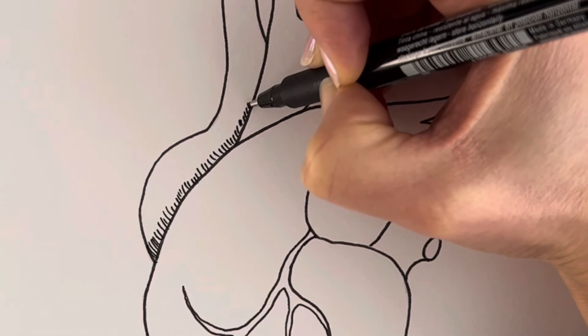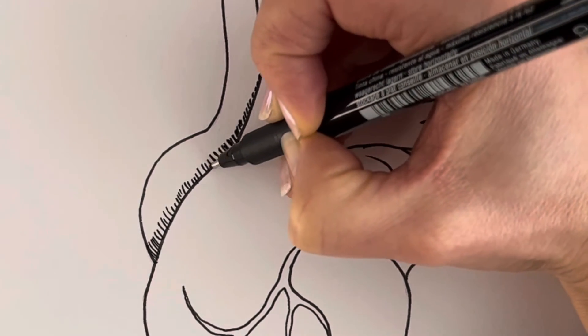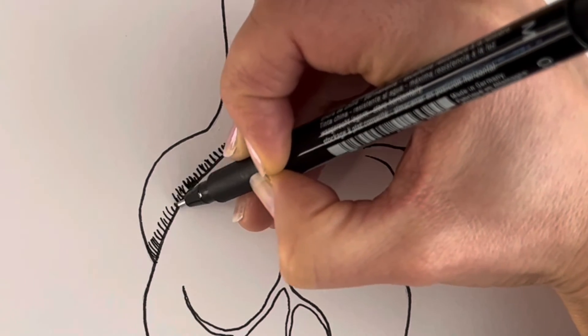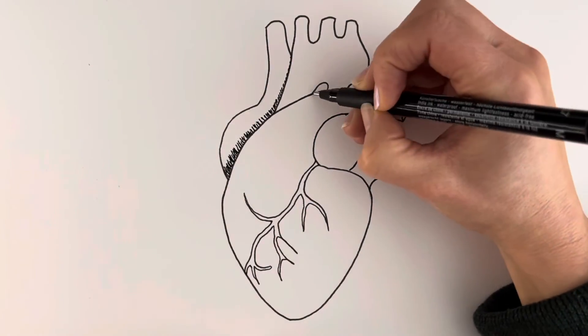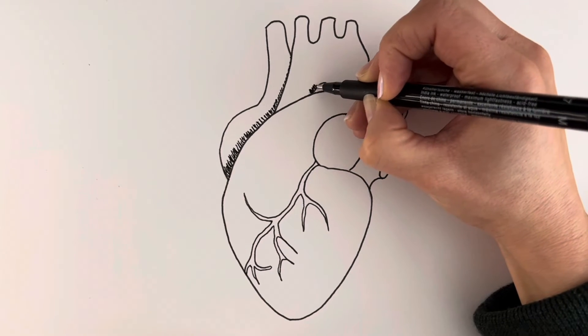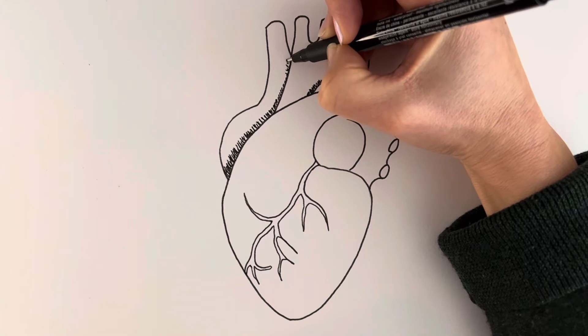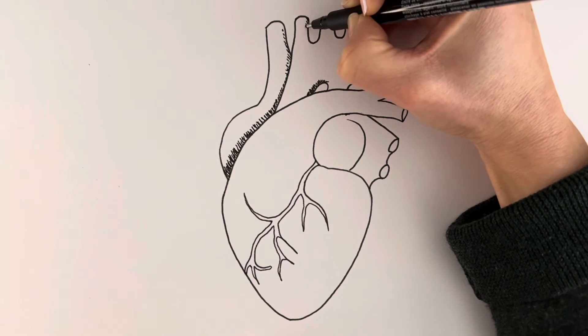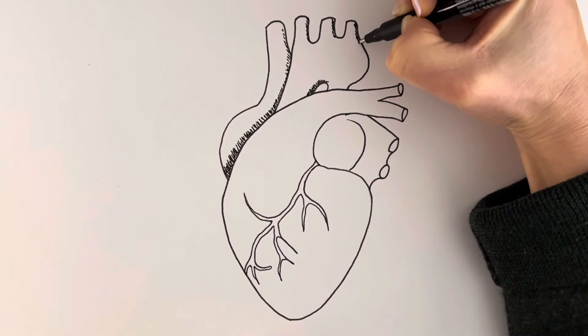So just drawing some shading here, some shadow shading. So just using lots of little lines. Just like that. And then the same down here. Just on one side. Just here. And then round.